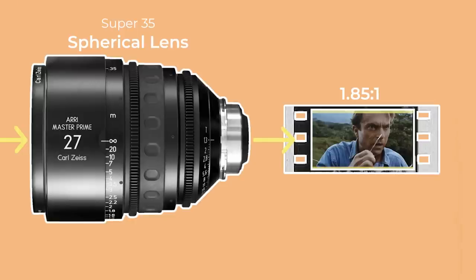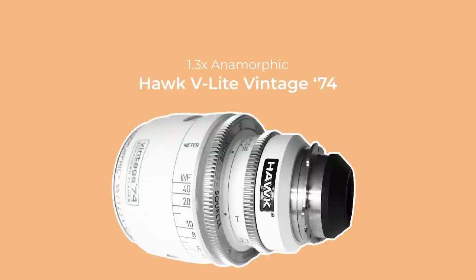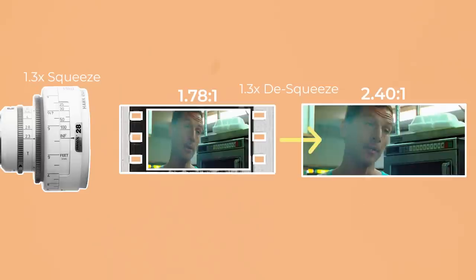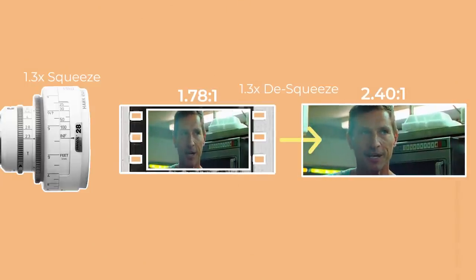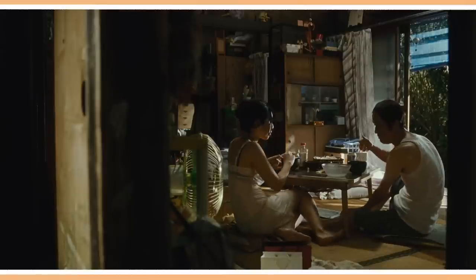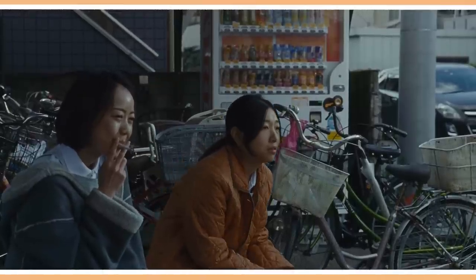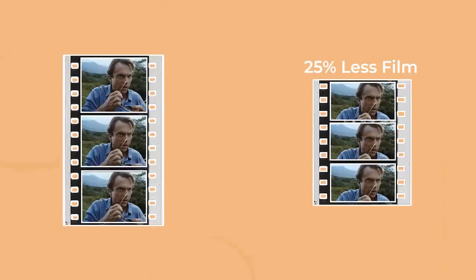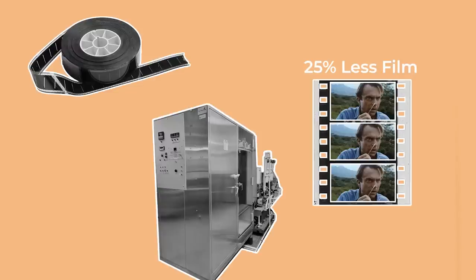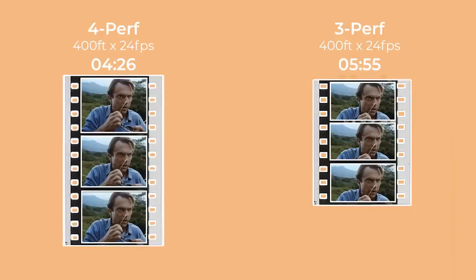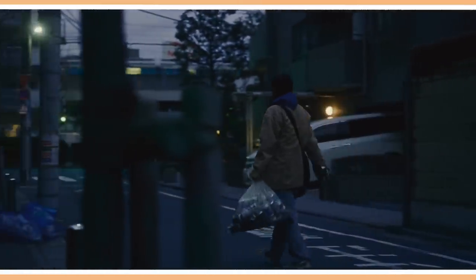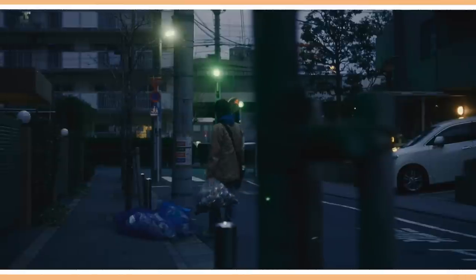3 perf is best used with spherical lenses. However, it is possible to use the less common 1.3x anamorphic lenses with 3 perf film, as they squeeze a 16x9 size negative into a widescreen 2.40 to 1 aspect ratio. Due to the decrease in recording surface area, grain will be slightly more prominent than when using 4 perf. The main reasons for shooting 3 perf are financial and practical — it uses 25% less film, resulting in a 25% reduction in cost for film stock and processing. It also means the camera can record for 33% longer, giving a total runtime of 5 minutes and 55 seconds per 400 foot roll, which is especially useful when shooting during golden hour.